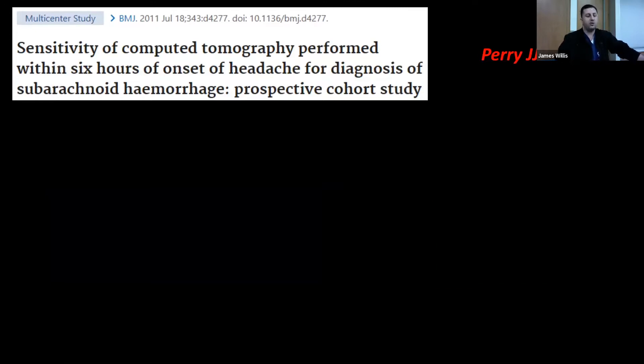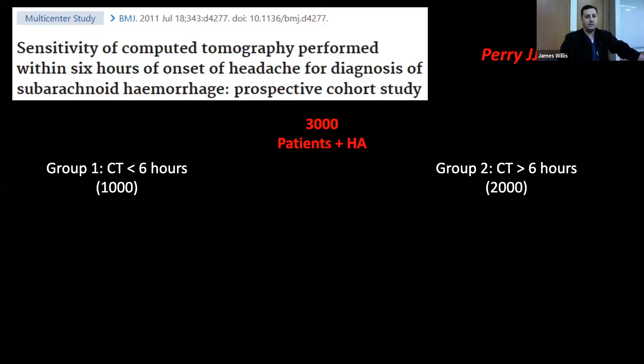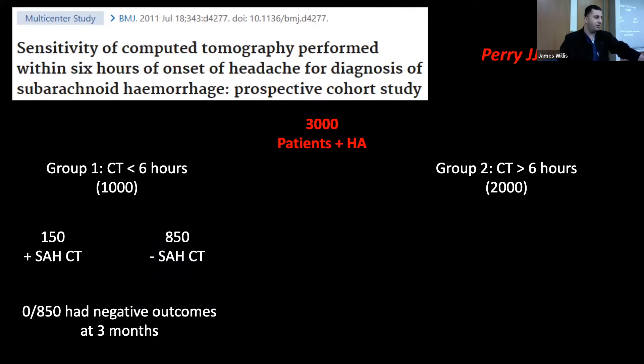I'm going to bring up four studies really quickly. PERI is one of the major contributors to the literature on this topic. When they evaluated the sensitivity of a CT performed within six hours of symptom onset, they took 3,000 patients who had a confirmed headache and put them into two different groups. The first group had about 1,000 patients, and they obtained their CT within six hours of symptom onset. The second group had about 2,000 patients, and their CT was after six hours. So six hours is this major point of demarcation. When they look at the first group, they found that 850 patients had no subarachnoid hemorrhage on CT. When they followed those patients for three months, none had negative outcomes.